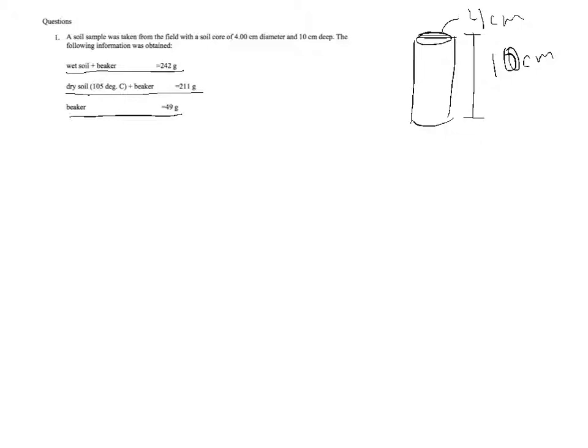The beaker weighs 49 grams. You'll recall that our calculation for bulk density, which is designated by uppercase D, lowercase b, was oven dry soil in grams divided by the volume in cubic centimeters.